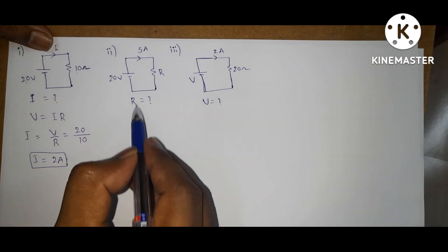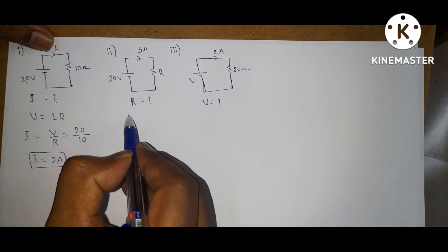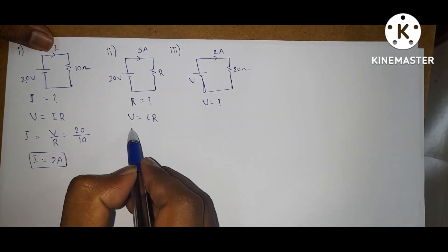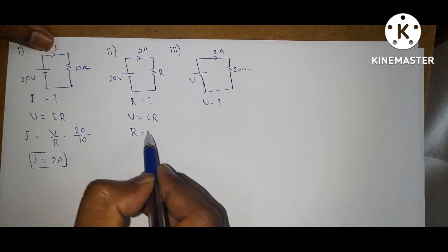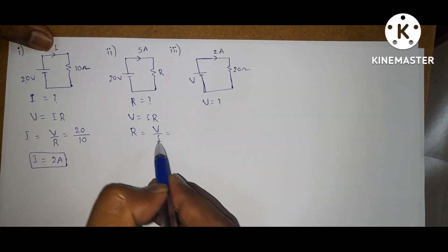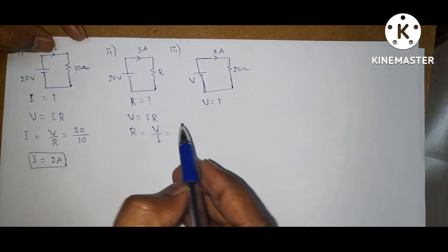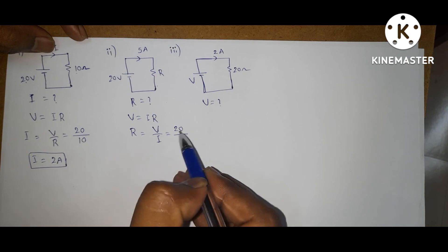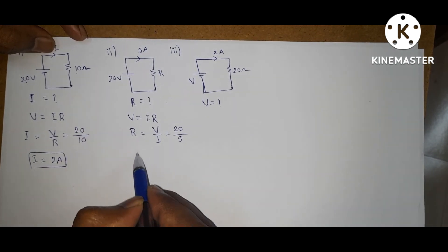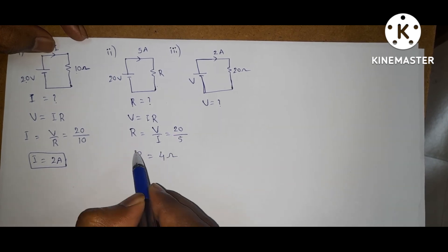Coming to the second problem. By Ohm's law, V = IR, so resistance R = V/I. The voltage across the resistance is 20 V and the current flowing through it is 5 A. So the resistance value is 4 ohms.